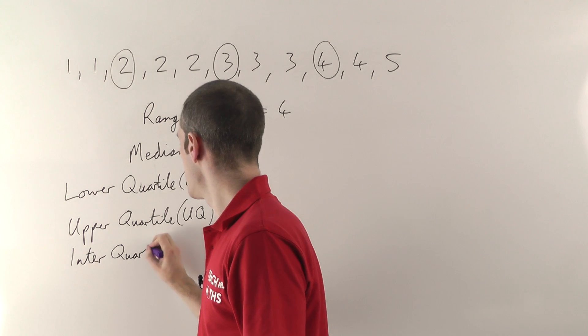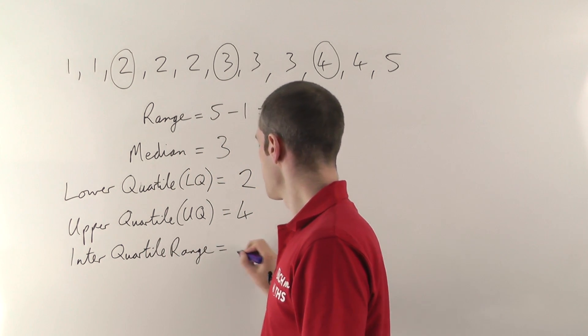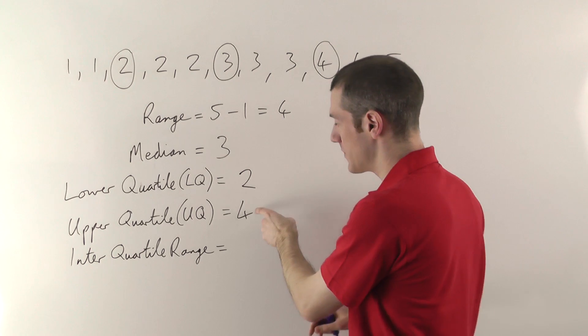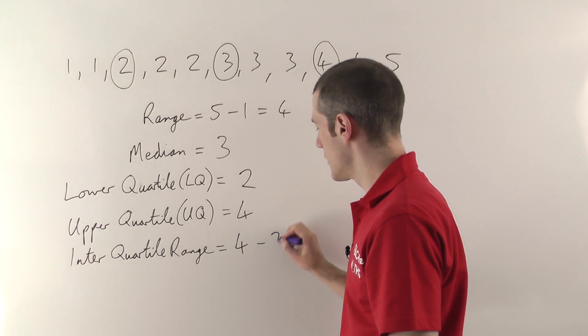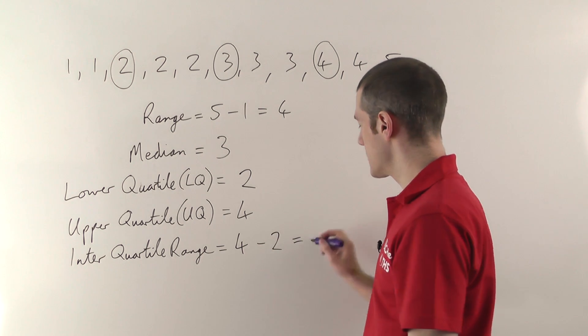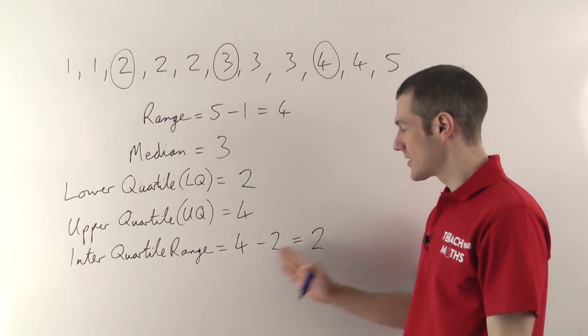The interquartile range is simply the upper quartile value, so 4, minus the lower quartile value, so 2, and 4 minus 2 is 2. And that's it, so the interquartile range will be 2.